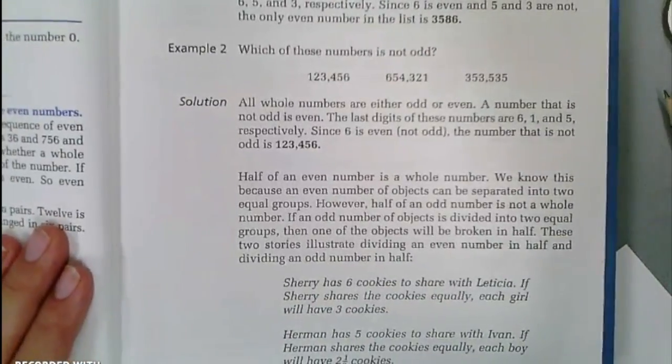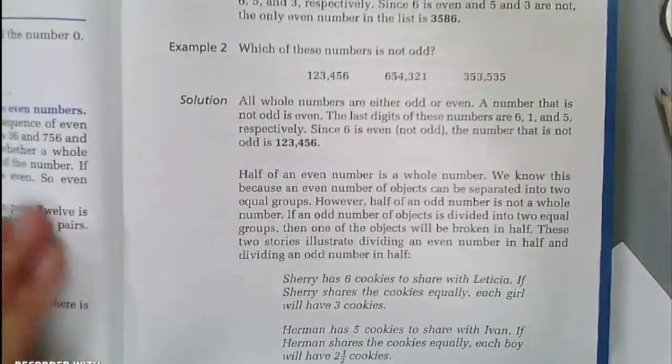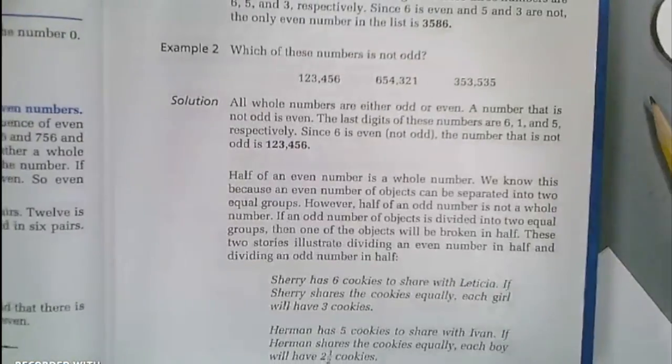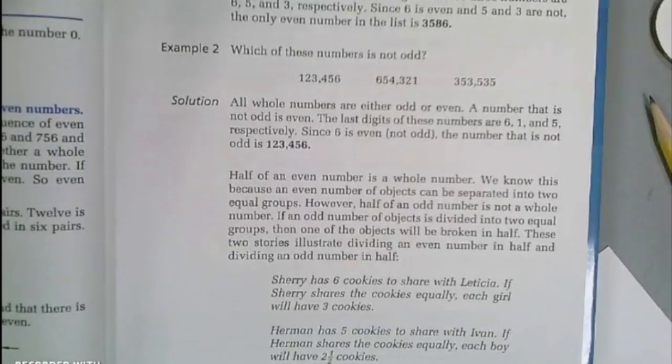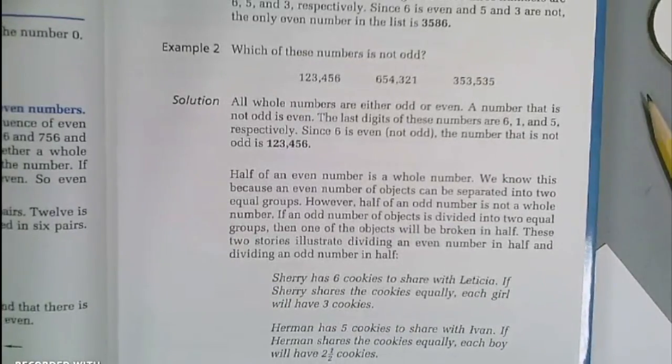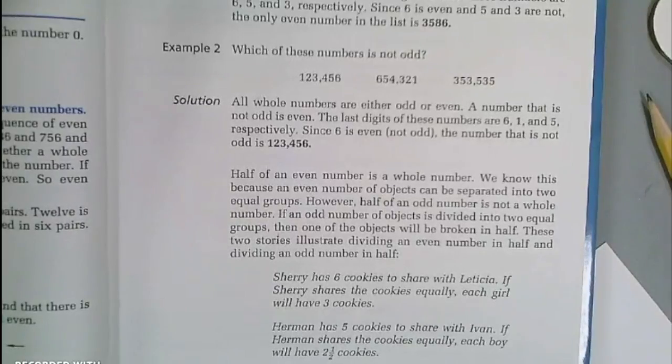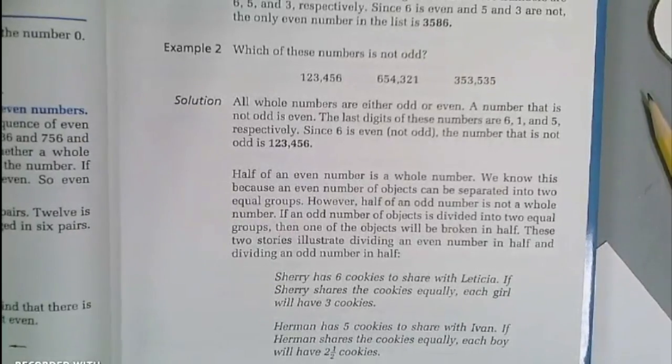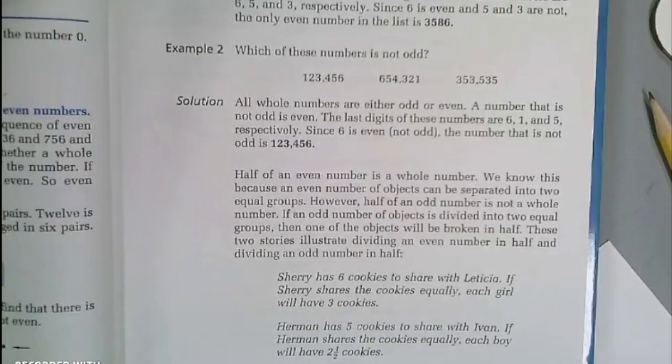The last thing that this lesson is about: half of an even number is a whole number. So whenever you divide an even number in half, like 8 is even, if I divided in half it would be 4. Or 12 is even, if I divided in half it's 6. Or 20 ends in a zero so it's even, and I divide that in half it would be 10.